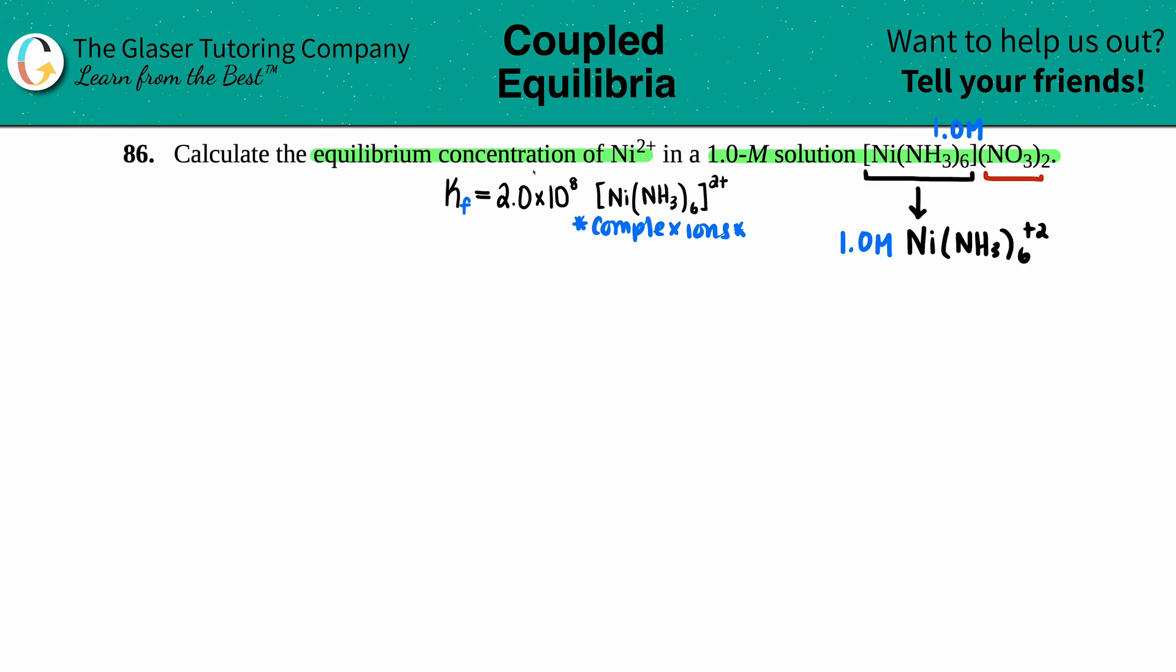In this case, we could use a Kd formula or Kd value because we're starting off with the complex ion, but if you just keep it with the Kf, you'll still get the same answer, so let's just do it that way. Remember, Kf—F stands for formation—you're forming your complex ion from your two components.